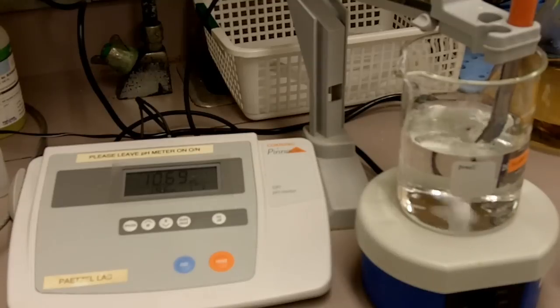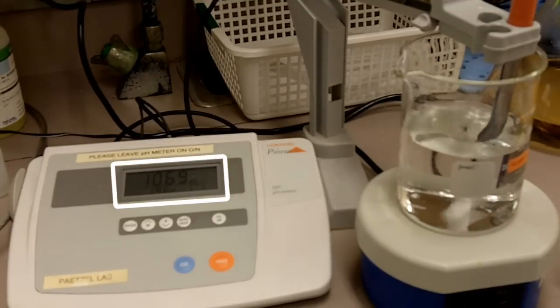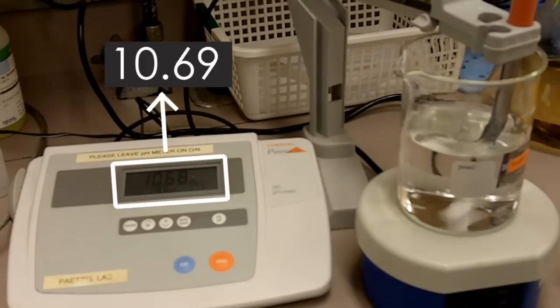Okay, right now we're going to pH the buffer. The reading right now is about 10.69. We're going to pH it down to 8.8 using concentrated hydrochloric acid.